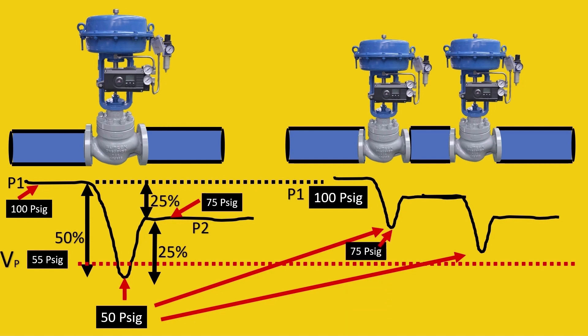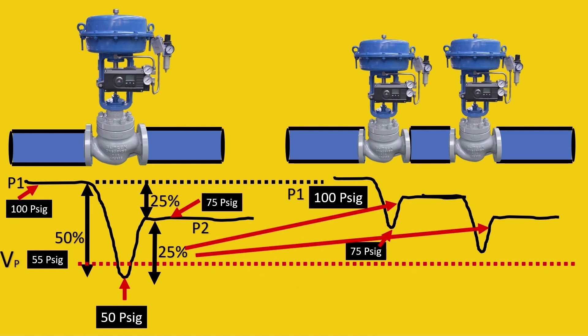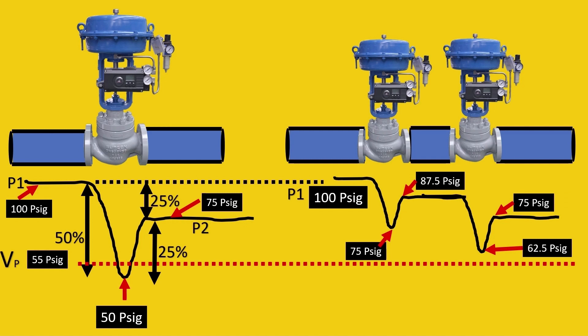It is going to be 25%. The recovery also will be divided between the two valves, so 25% divided will be 12.5, 12.5. Here 75 plus 12.5 is 87.5 psig. We get the first recovery and again the pressure drop is going to be 25%, so 25% of 87.5 is 62.5 psig and again the recovery of 12.5 which is 75 psig.